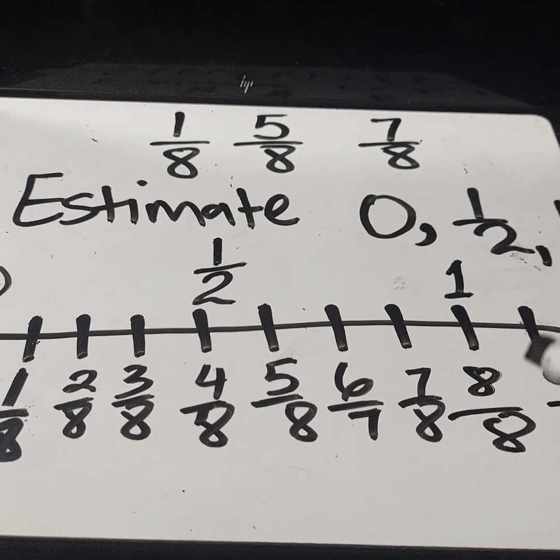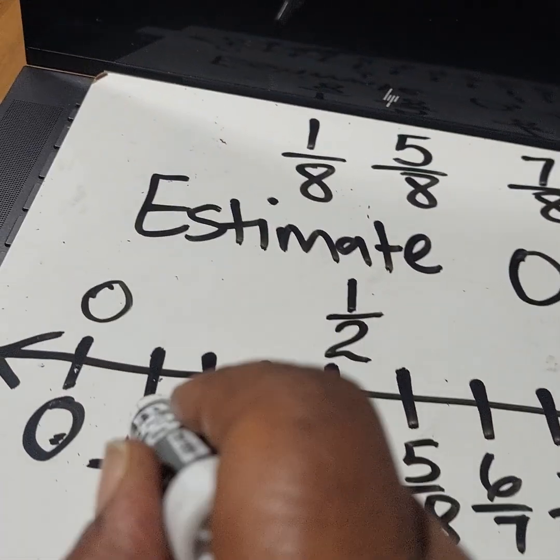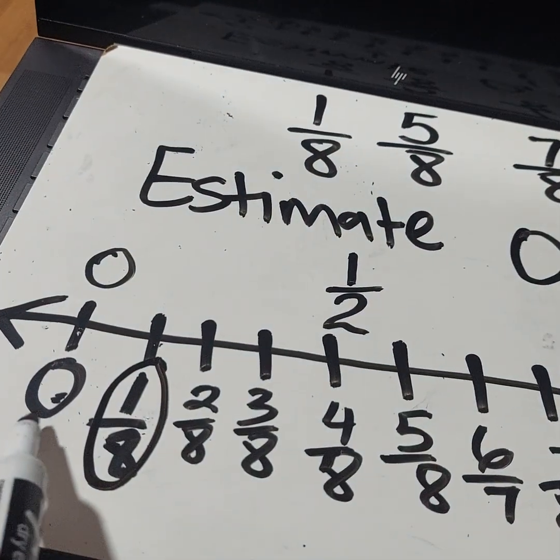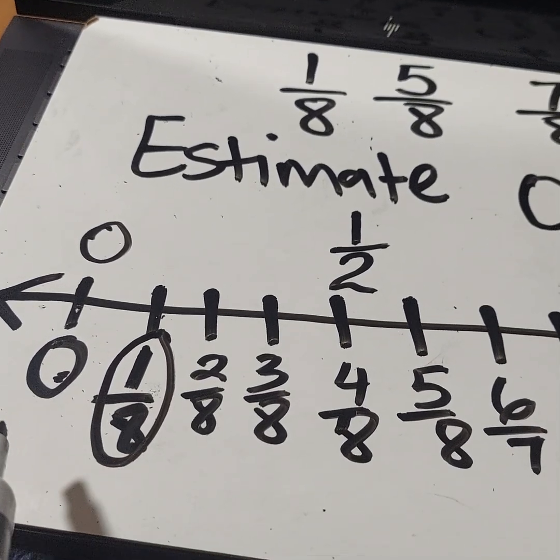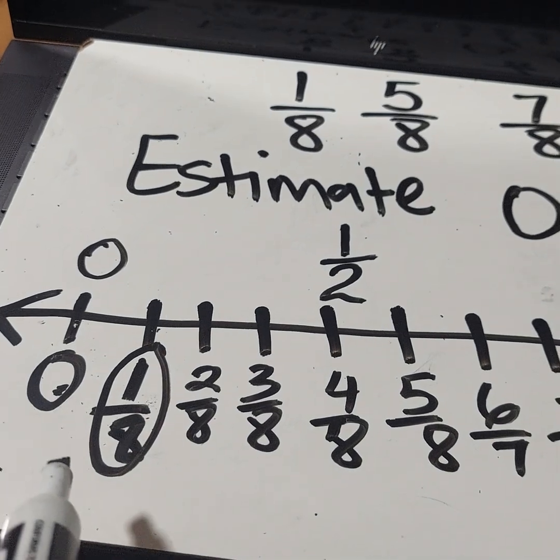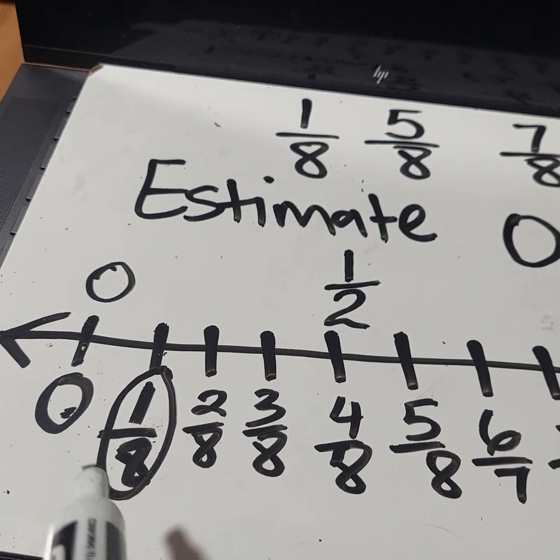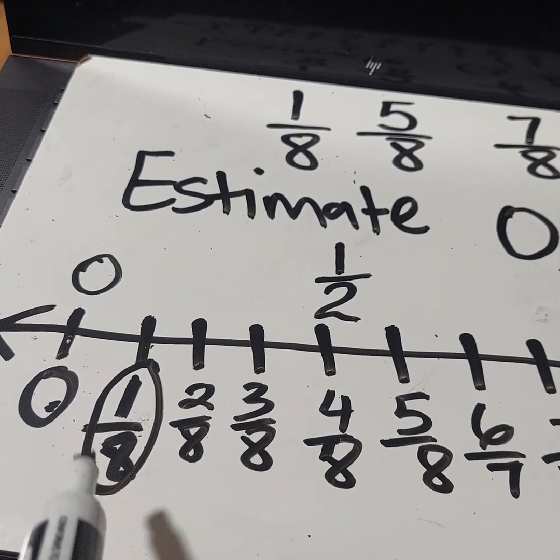And now you can see visually that one eighth is close to zero. Look at it. It's adjacent to zero. It's right next to it. So I can say one eighth is close to zero. So if I were to estimate this, I would say, well, it's close to zero.